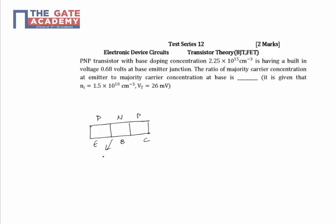This is the junction between emitter and base. In emitter, holes are majority carriers and electrons are minority carriers. In base, holes are minority carriers and electrons are majority carriers.